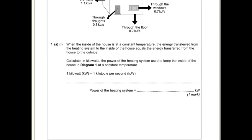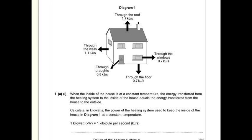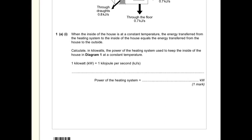So you've got 1.7 plus 1.1 is 2.8, 3.6, 4.3, 5.0. So it's just 5.0 kilowatts.